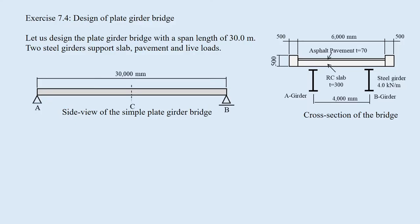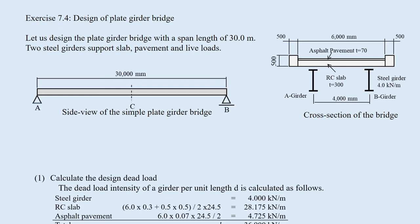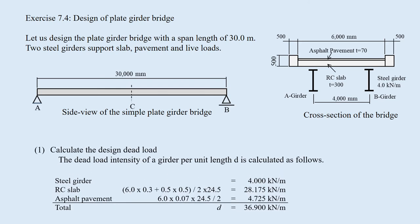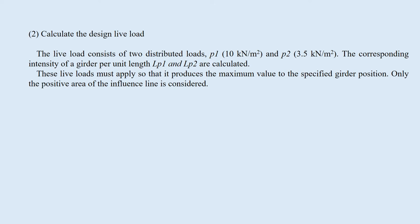Exercise 7.4: Let us design the plate girder bridge with a span length of 30 meters. Two steel girders support slab, pavement, and live loads. First, the dead load intensity of a girder per unit length D is calculated. Then calculate the design live load. The live load consists of two distributed loads: P1 at 10 kN per square meter, and P2 at 3.5 kN per square meter. The corresponding intensity of a girder per unit length, LP1 and LP2, are calculated.